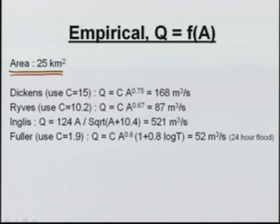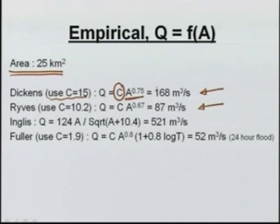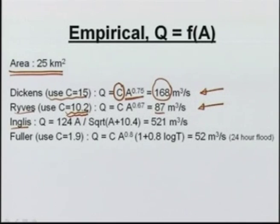There are also empirical equations to find the flood discharge. For the same catchment of 25 km², Dickens' equation is used for northern India and hilly regions, with different C values for different areas. Using C = 15 (higher limit for hilly areas), Q = 15 × A^0.75 gives 168 m³/s. Similarly, Ryves' equation gives 87 m³/s and Inglis' equation (derived for Maharashtra) gives 521 m³/s, which is very high. These equations should be used only for the areas they were derived for.